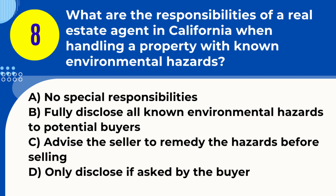Answer: B. Fully disclose all known environmental hazards to potential buyers. Explanation: In California, real estate agents are required to fully disclose any known environmental hazards of a property to potential buyers.